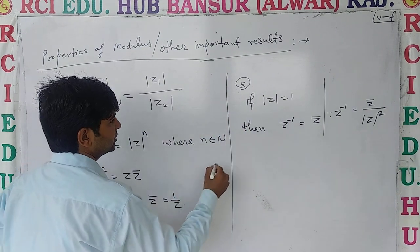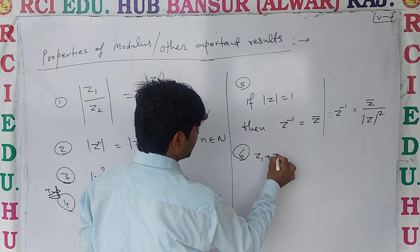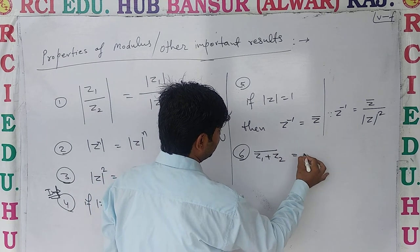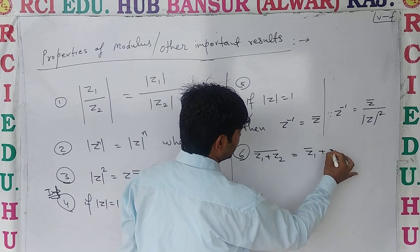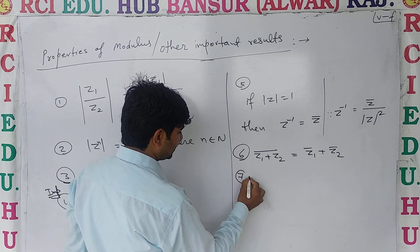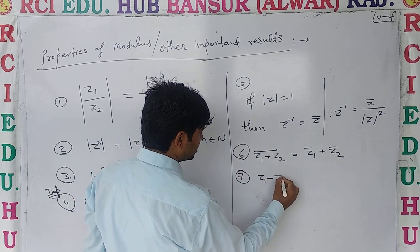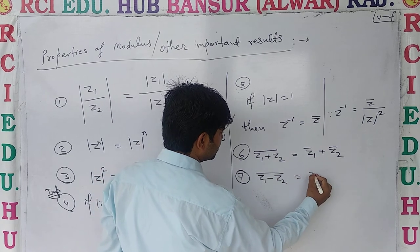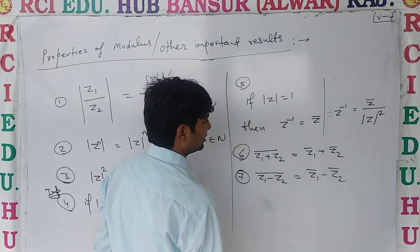छठा: Z1 plus Z2 का bar है, तो आप Z1 bar plus Z2 bar लिखोगे। ऐसे ही अगर Z1 minus Z2 का bar है, तो Z1 bar minus Z2 bar।